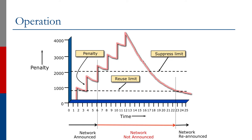After that, the prefix continues to decay and flap repeatedly until the problem is fixed. The decay then carries on, and since the prefix is no longer flapping, the decay continues until it reaches the reuse limit — 750 in this diagram — which is many, many minutes later. The time depends on the vendor defaults or configured values.